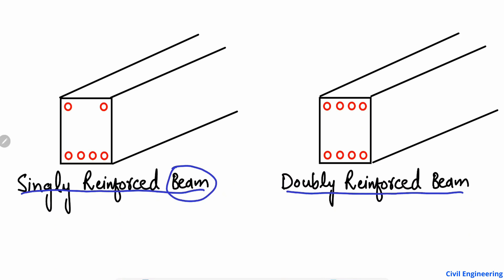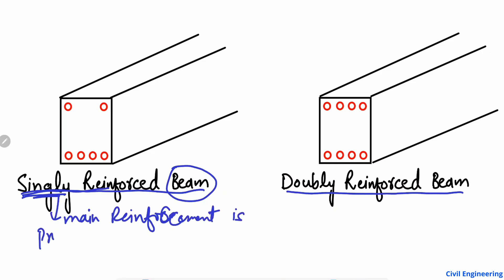How can we differentiate between these two types of beam? The singly reinforced beam is a type of beam where the main reinforcement is provided only in the tension zone — that is why it is called singly reinforced. The main tensile reinforcement is provided in only one zone, and this is mostly the tension zone. So we call it a singly reinforced beam.